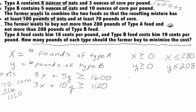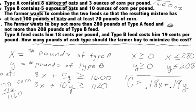We also have information about cost, and we want to minimize it. The cost function is: type A costs $0.18 per pound times x pounds, plus type B costs $0.19 per pound times y pounds. So C = 0.18x + 0.19y. We'll save this until the end of the procedure.